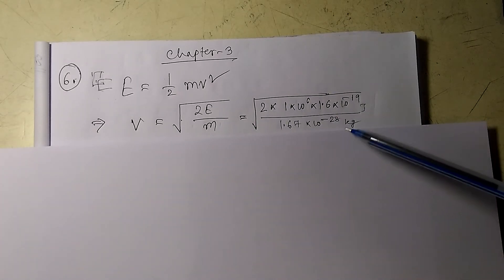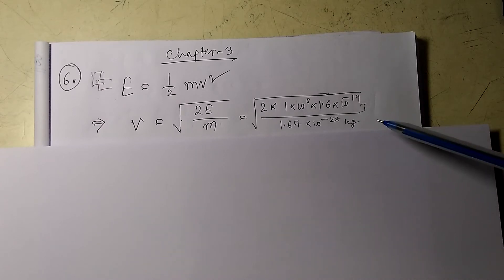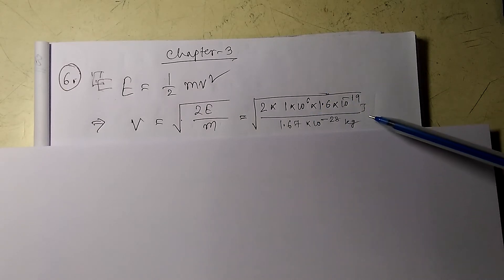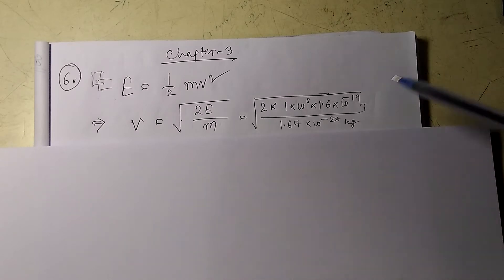We know the mass of the proton, which is 1.67 times 10 to the power minus 28 kg. I am converting this to SI units, so the energy would be in joules and the mass would be in kg. If I put that value and calculate this term, I will get an approximate value of...